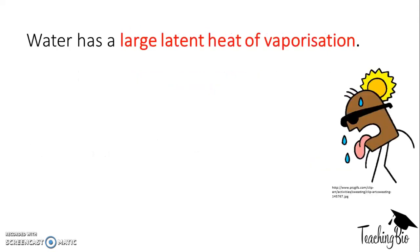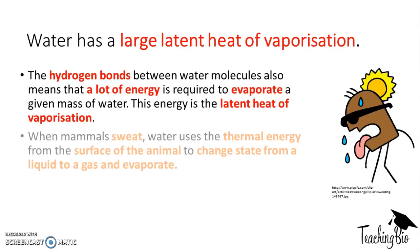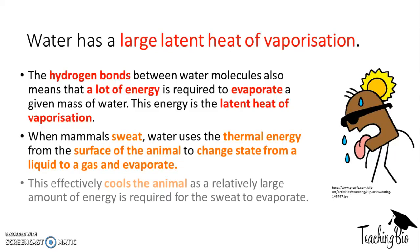Water also has a large latent heat of vaporization, because the hydrogen bonding between water molecules means that a lot of energy is required to evaporate a given mass of water — that energy is called the latent heat of vaporization. When mammals sweat, water uses the thermal energy from the surface of the animal to change state from liquid to gas and evaporate, and that helps to cool animals down.